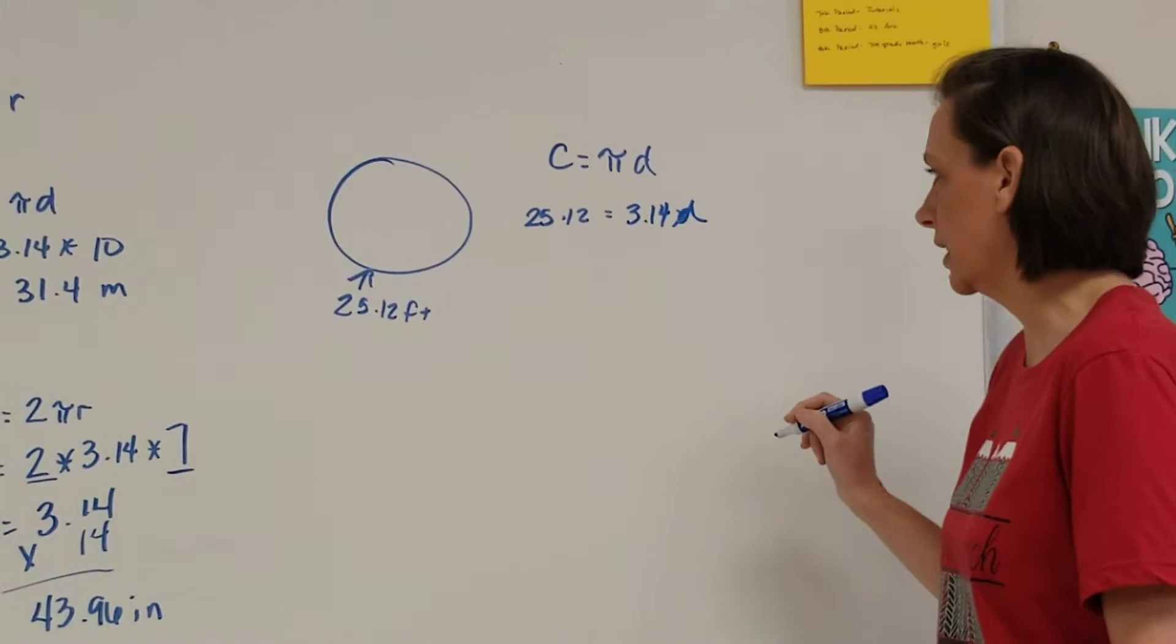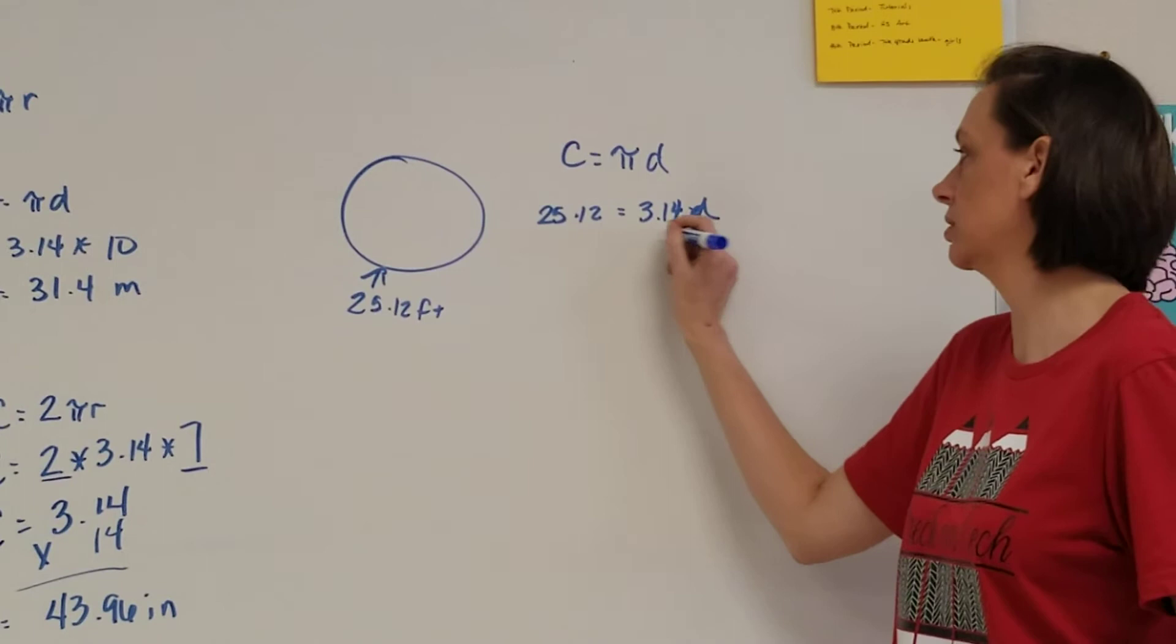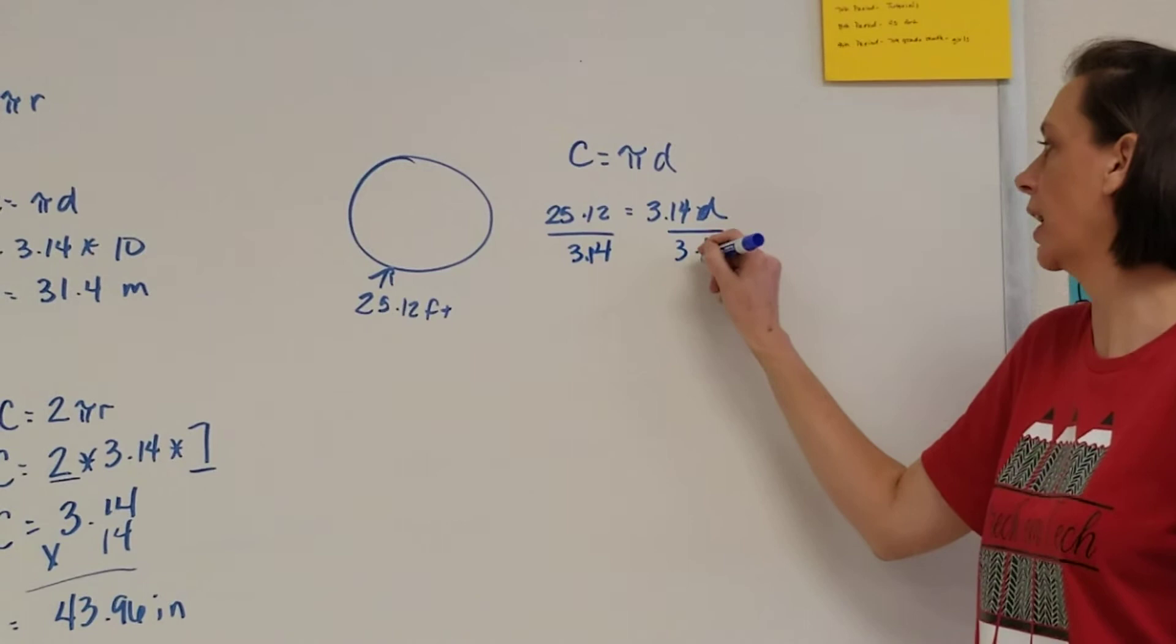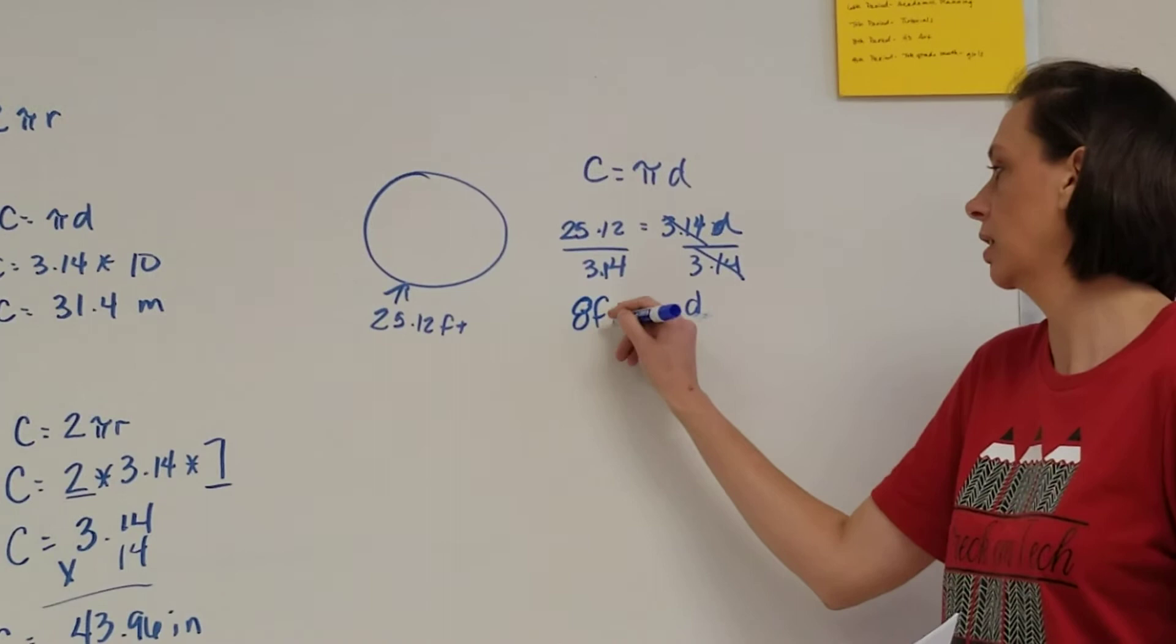25.12 equals pi 3.14 times d for diameter. This is a formula you should be used to seeing. Just like before, if I have 3.14 attached to my d, instead of multiplying, I need to divide by 3.14. Both sides, these cancel out, this diameter by itself,